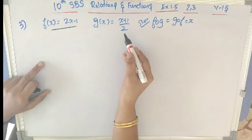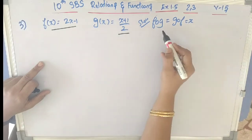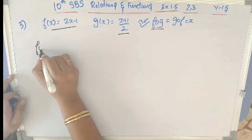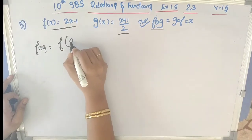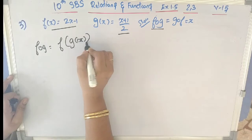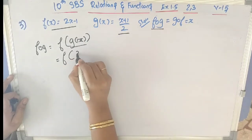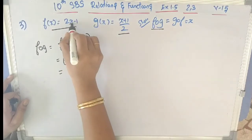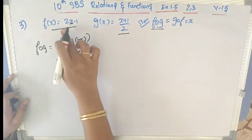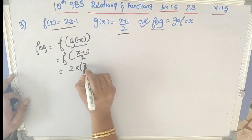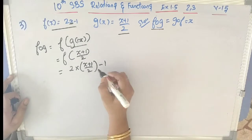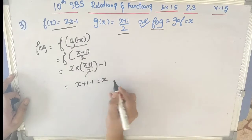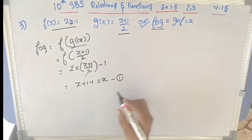Now let's go to Problem 3. Here f(x) = 2x − 1 and g(x) = (x + 1)/2. We have to show that f∘g = g∘f = x. First find f∘g = f of g(x). g(x) = (x+1)/2, so f((x+1)/2) = 2·(x+1)/2 − 1 = x + 1 − 1 = x. So f∘g = x. Marking this as equation 1.